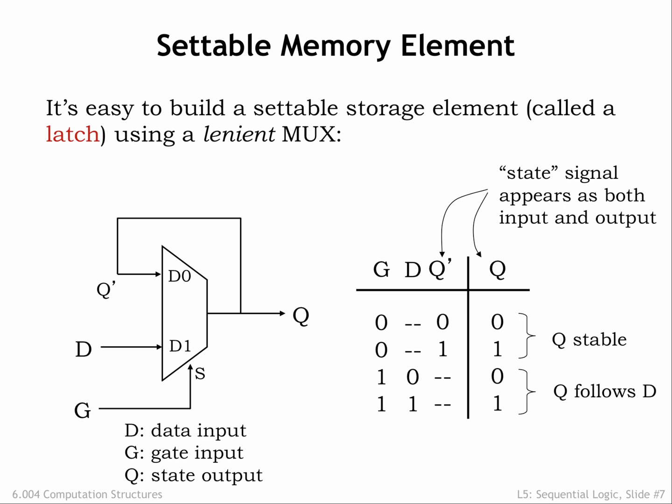When the gate input is low, the MUX's output is looped back through the MUX via the D0 data input, forming the bi-stable positive feedback loop discussed in the last section. Note our circuit now has a cycle, so it no longer qualifies as a combinational circuit.